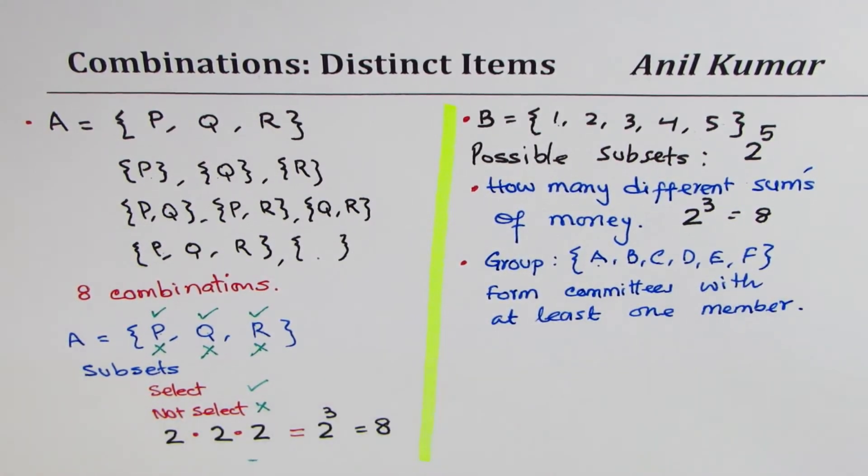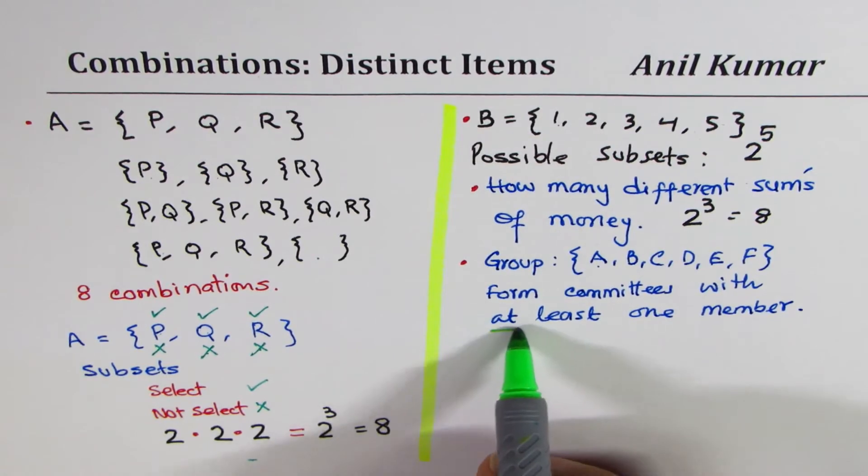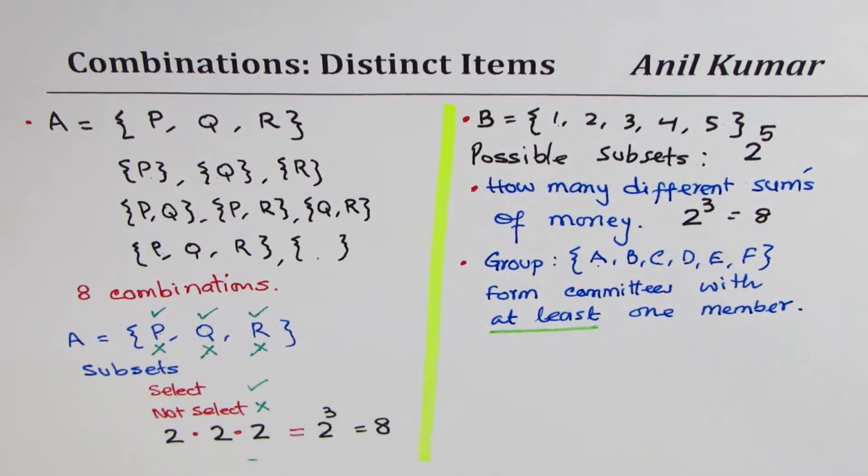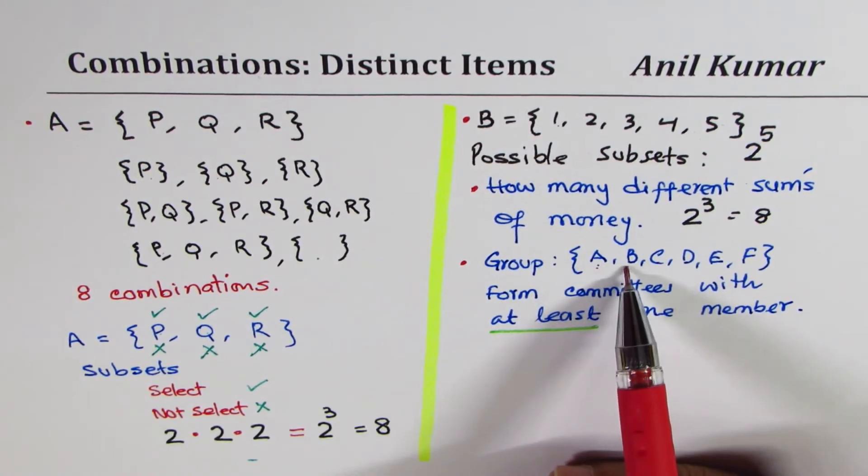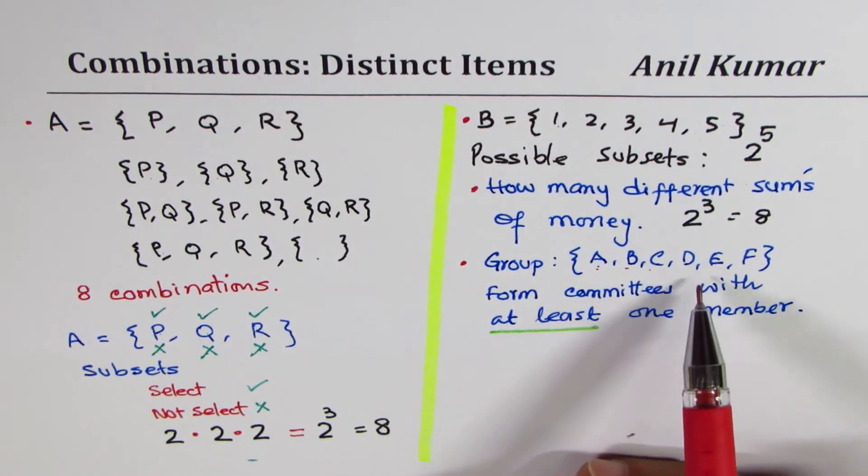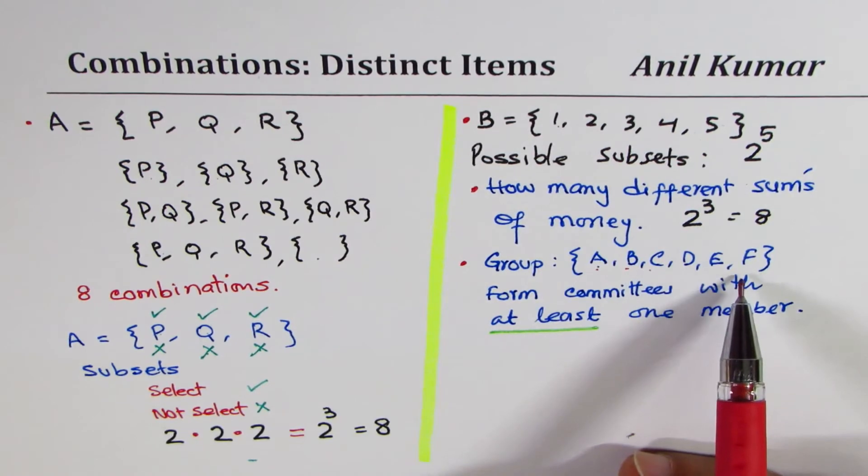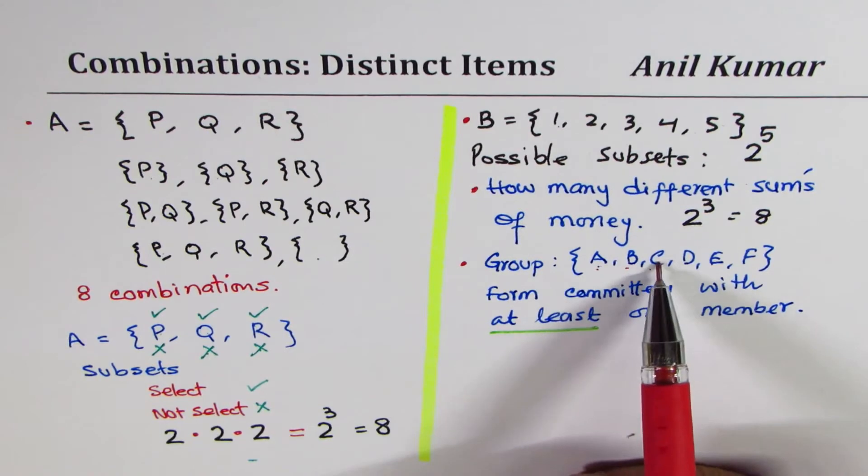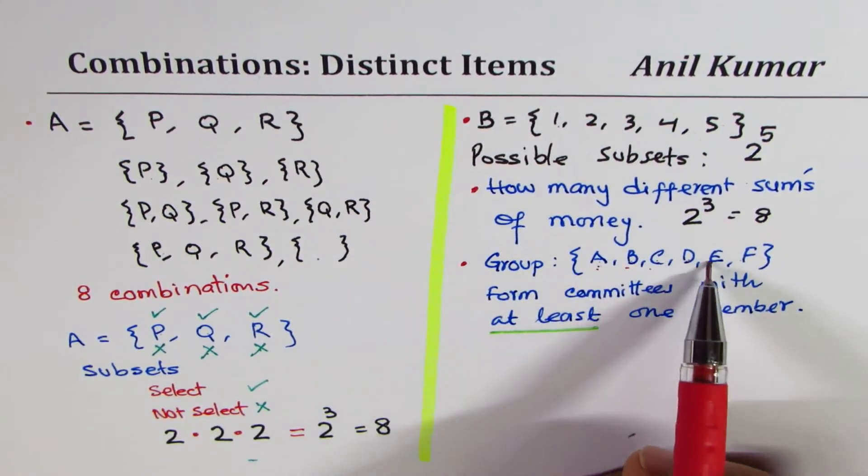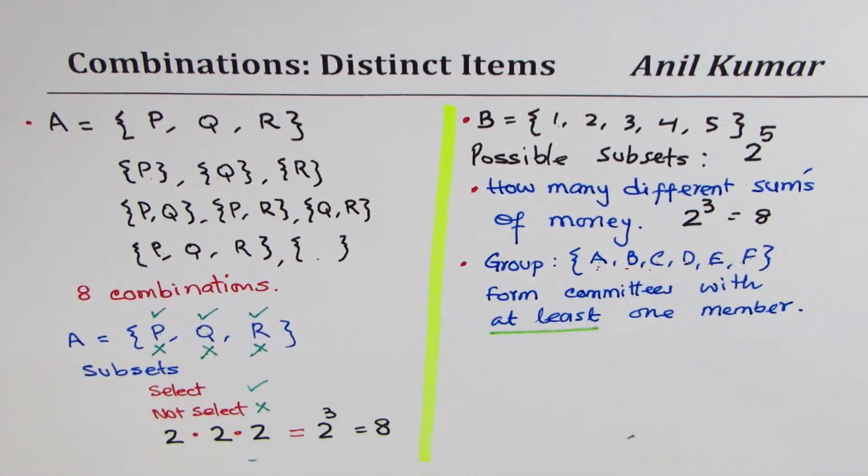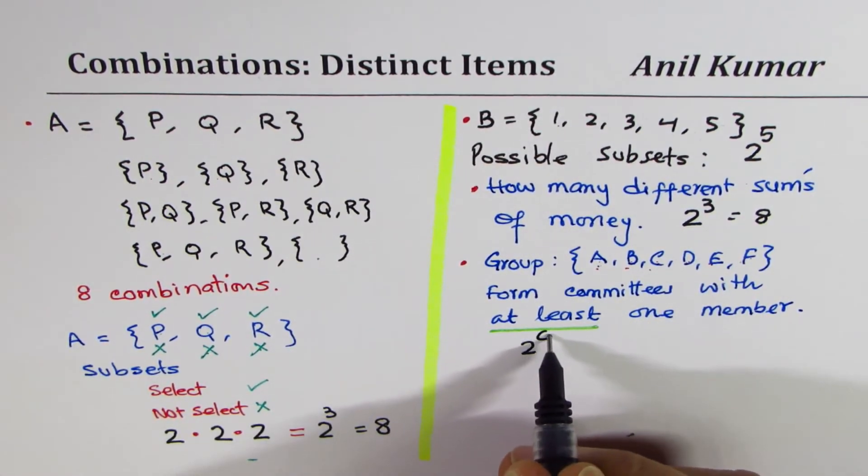Now, how many such committees can you form? That's the question for you. The key word here is at least. Now let's look into this part. We may select A. We may not select A. We may select B. We may not select B. Similarly, we can select any one of these. We may not select them. Do you get my point? So for every member, there is choice of 2. Since there are 1, 2, 3, 4, 5, 6, we have total of choices 2 to the power of 6.